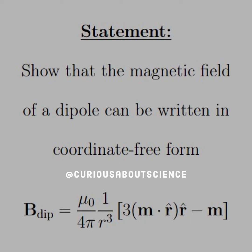And this has to do with the dipole yet again. This time the magnetic dipole. Our statement reads, Show that the magnetic field of a dipole can be written in coordinate-free form B dipole equal mu naught over 4 pi times 1 over r cubed times bracket 3 m dot r hat times r hat minus m.